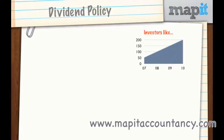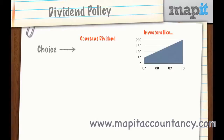Firms do have choices available to them. For example, a constant dividend — on a diagram this would appear as a straight line. That might suit some investors because they have certainty, but inflation will start to eat away at that dividend, so it's not something investors will particularly like. A constant dividend gives certainty but it isn't that ratcheted or increasing dividend.